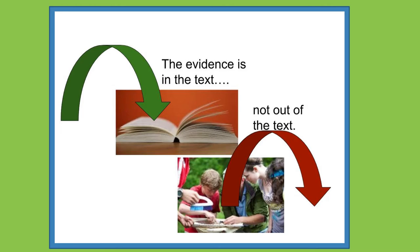This graphic helps illustrate that any evidence in a text-dependent prompt is always found in the text, not outside of it. We have to go back into that specific reading. The picture shown represents students experiencing something through hands-on experience outside of the text, which cannot be used. Any information used to respond to the prompt must come from the text.